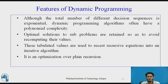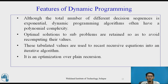Although the total number of different decision sequences is exponential, dynamic programming algorithms often have polynomial complexity. This is because solutions to sub-problems are retained and reused rather than recomputed. These tabulated values are used to recast recursive equations into an iterative algorithm, making it an optimization over plain recursion.